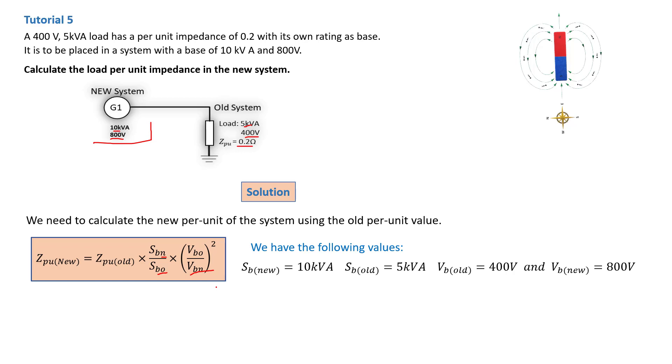Basically, we have everything. The only thing left to do is replace all the values into our formula, and that gives us Z per unit new equals 0.1j per unit. Now this is very interesting. You can see it equals 0.1, which is basically half of the original 0.2.